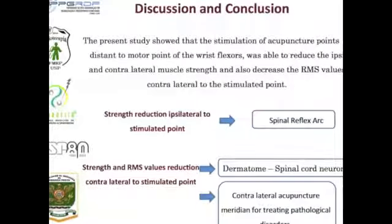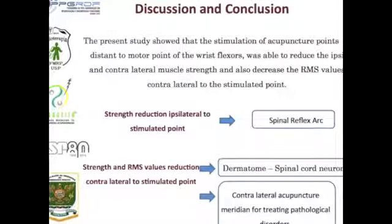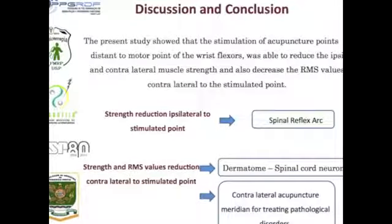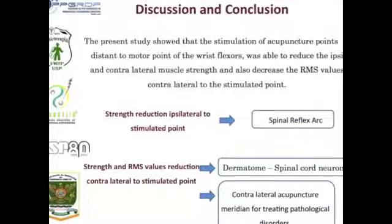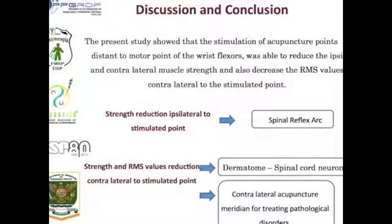In our previous work, we showed that stimulation of a spleen line acupuncture point, which is adjacent to the motor point of the tibialis anterior muscles, is able to reduce ipsilateral root mean square values without interfering with the generation of muscle force.